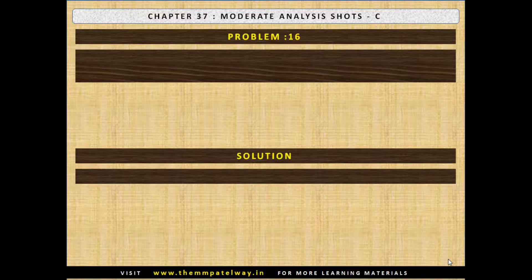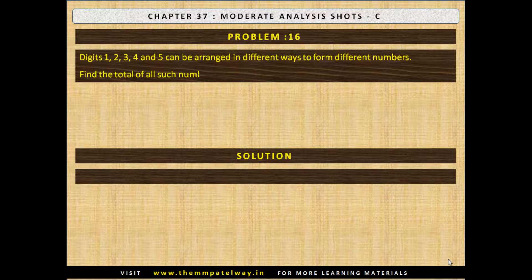Problem No. 16. Digits 1, 2, 3, 4 and 5 can be arranged in different ways to form different numbers. Find the total of all such numbers. The solution is the total will be 39,99,960.